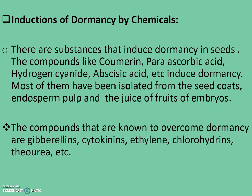Induction of dormancy by chemicals: There are substances that induce dormancy in seeds. Compounds like coumarin, abscisic acid, hydrogen cyanide, and others induce dormancy. Most have been isolated from seed coats, endosperm, pulp, and juice of fruits, and from embryos. Compounds known to overcome dormancy include gibberellins, cytokinins, ethylene, chlorohydrins, and thiourea. The compounds that induce dormancy are non-toxic but maintain dormancy until they are either destroyed or leached out, at which point the seed remains dormant. Plants have the unique property of synthesizing compounds that can both induce and break dormancy, with synthesis occurring under different environmental conditions.